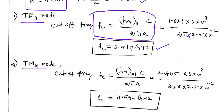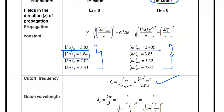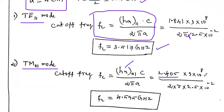Similarly, for TM01 mode the cutoff frequency formula is Fc = Ha_01 × C / (2π A). For TM mode, Ha_01 = 2.405. Substituting: 2.405 × (3×10^8) / (2π × A), the answer is 4.595 GHz.